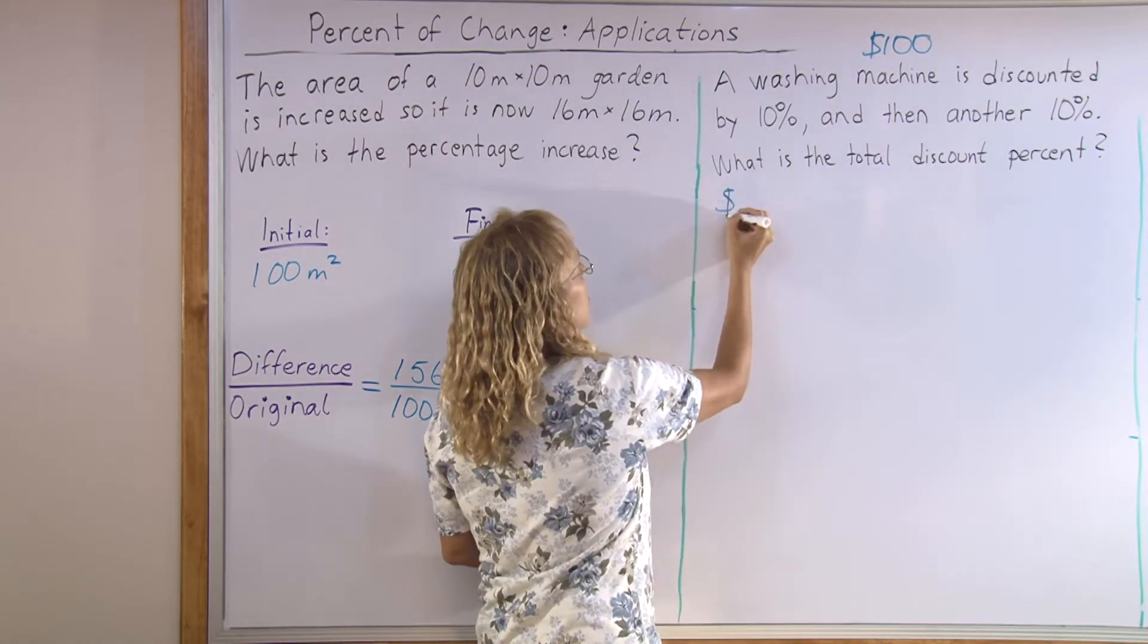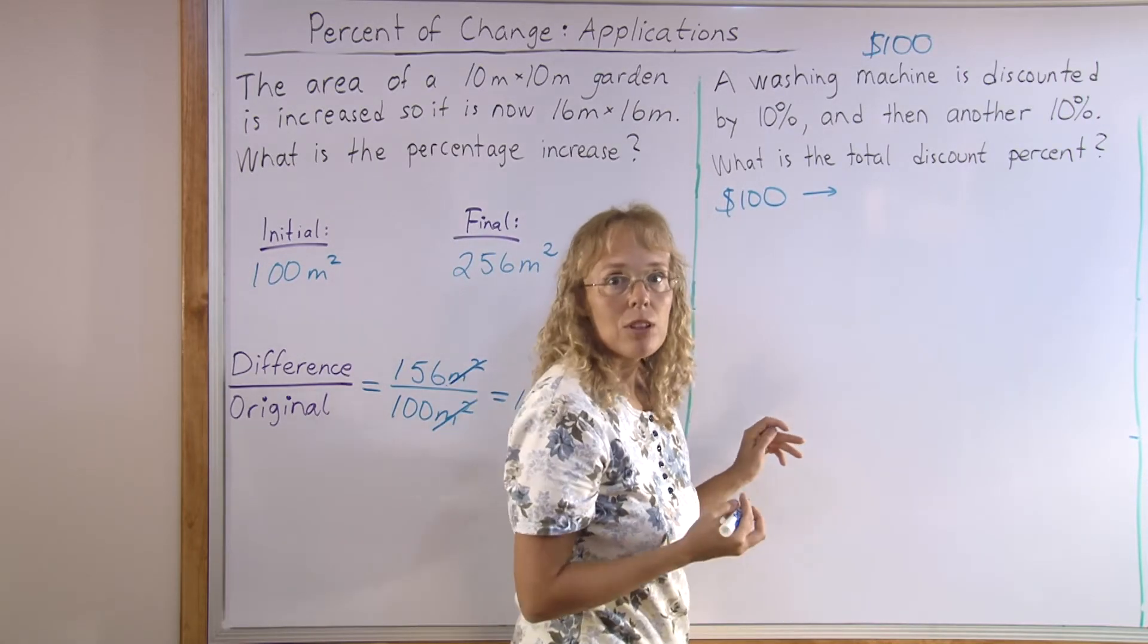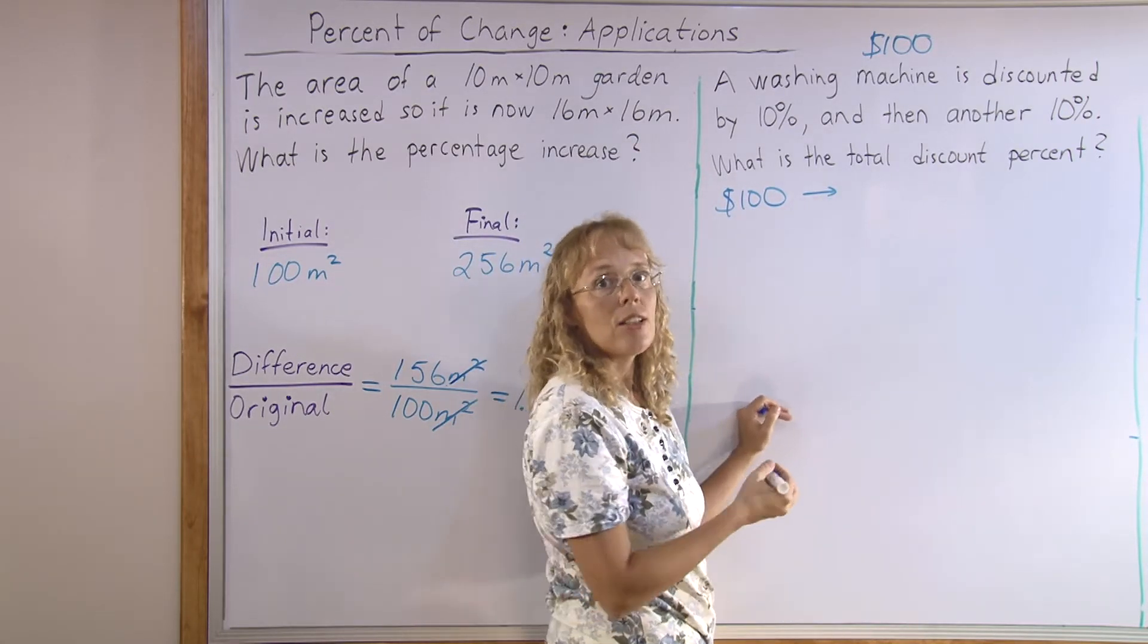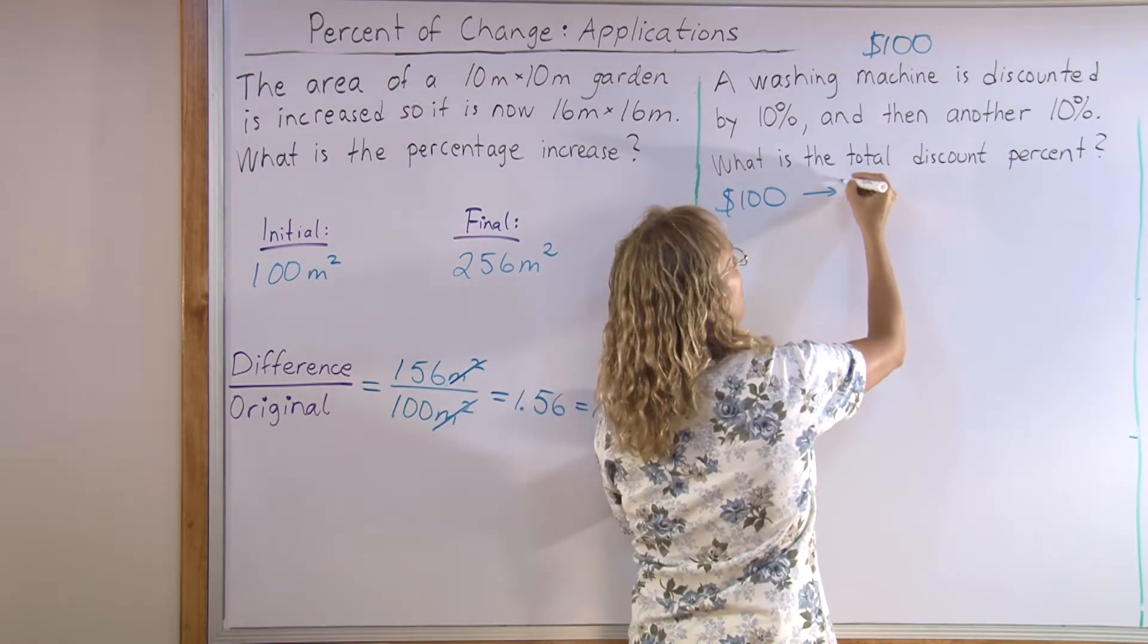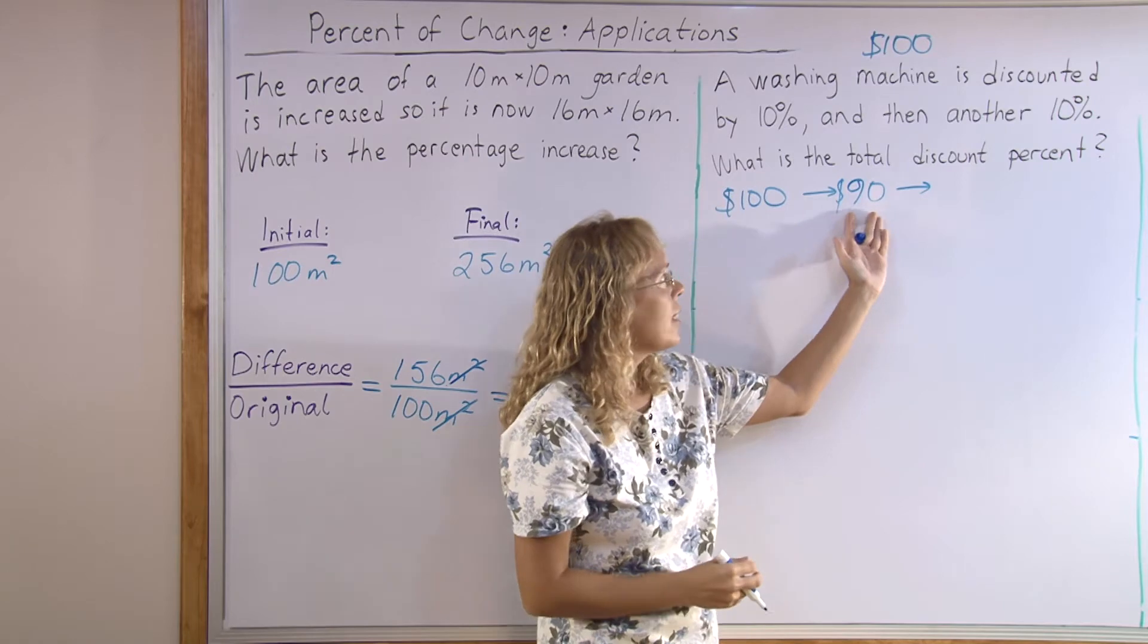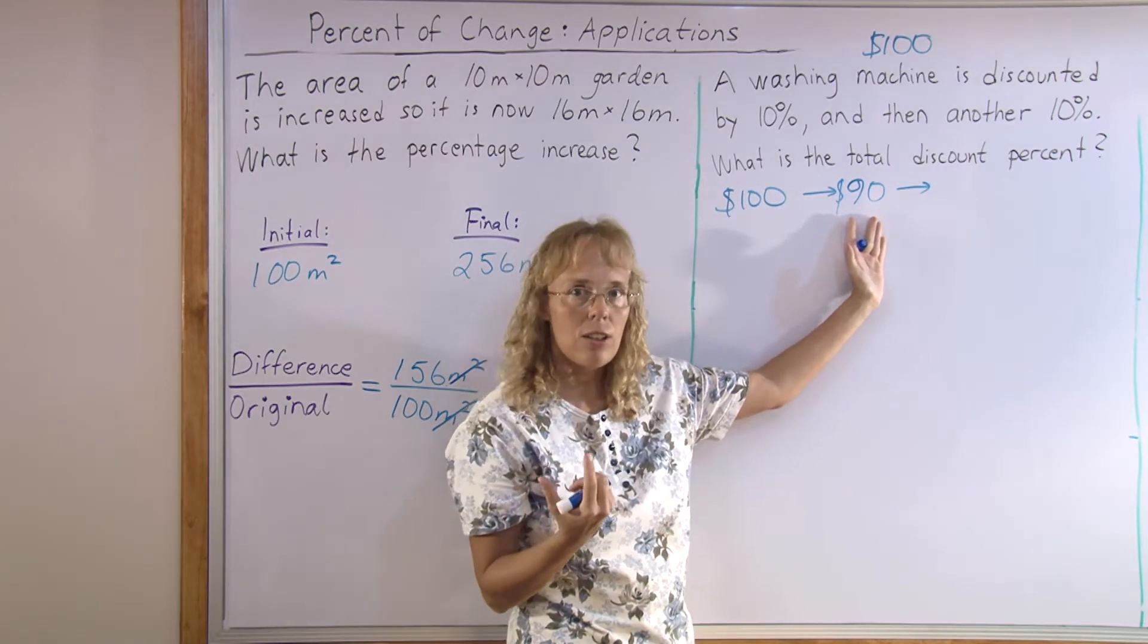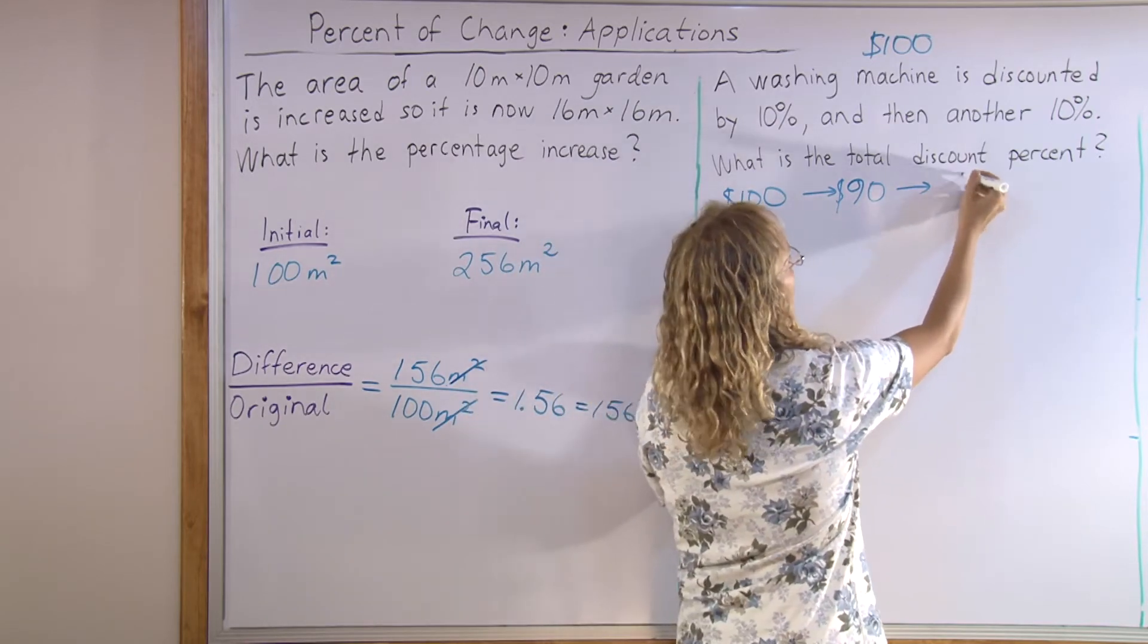So, let's say that the price is $100 and see what happens. At first, it is $100. Then, after the first discount of 10%, the price is $90. And after the second discount, we need to take 10% of this number and subtract. So, 10% of 90 is $9 and subtract, so we get $81.